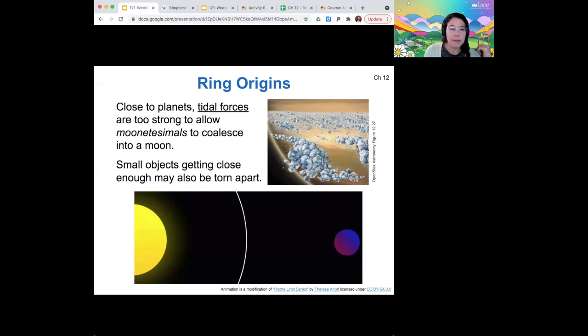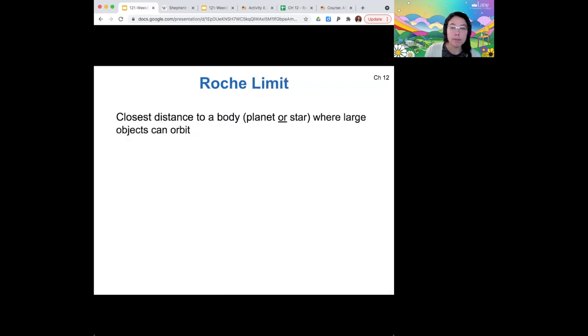But there's a second theory that says that rings come from small objects that get too close to the planet and are therefore torn apart by tidal forces and create a ring over time. So this idea is in connection to this idea called a Roche limit.